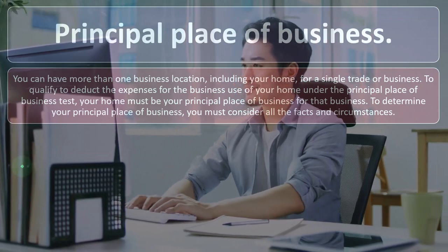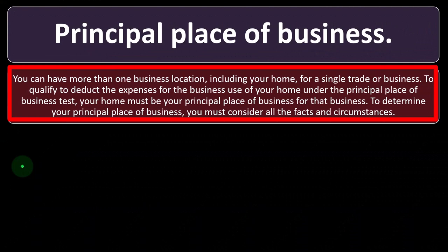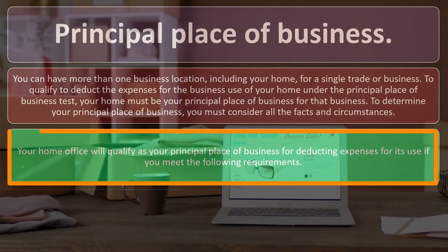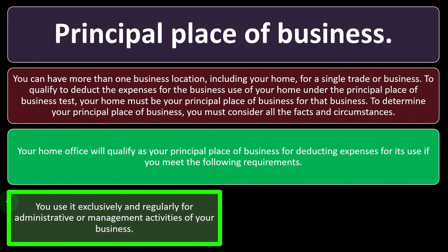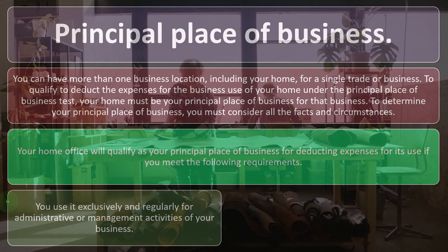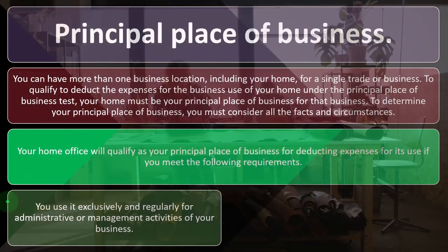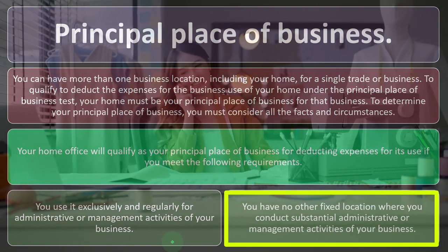Regarding principal place of business: you can have more than one business location including your home. To qualify under the principal place of business test, your home must be your principal place of business for that trade or business. Your home office will qualify if you use it exclusively and regularly for administrative or management activities of your business — such as planning, accounting, and scheduling — and you have no other fixed location where you conduct substantial administrative or management activities.